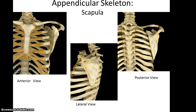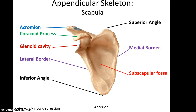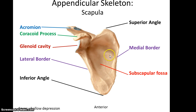The scapula, on the other hand, is a rather odd-shaped bone. It sort of wraps around from your lateral side a little bit toward the posterior side, running along a number of the ribs. Important features of the scapula include the acromion, which is a superior process that articulates with the clavicle. You have the glenoid cavity, where the humerus is going to articulate with the scapula. And a little bit superior to that is the coracoid process. Looking at the main triangle of the scapula, you see a lateral border, an inferior angle, a medial border, and a superior angle. The curvature on the bulk of the scapula is referred to as the subscapular fossa.